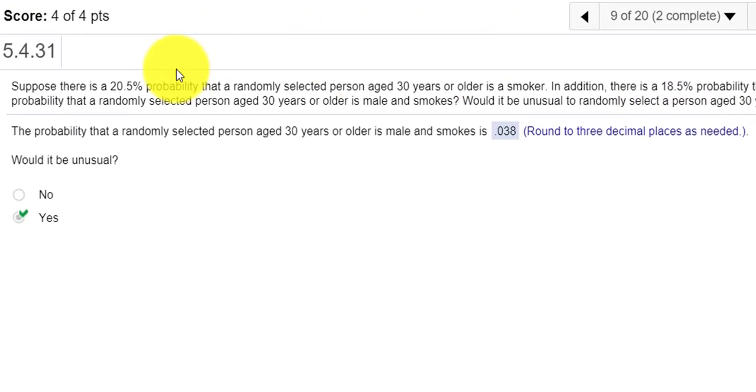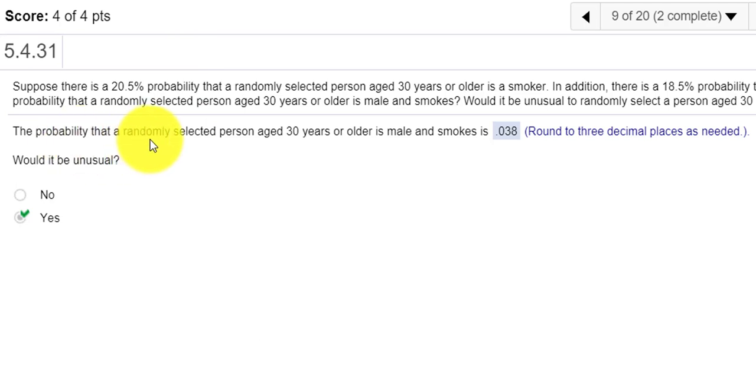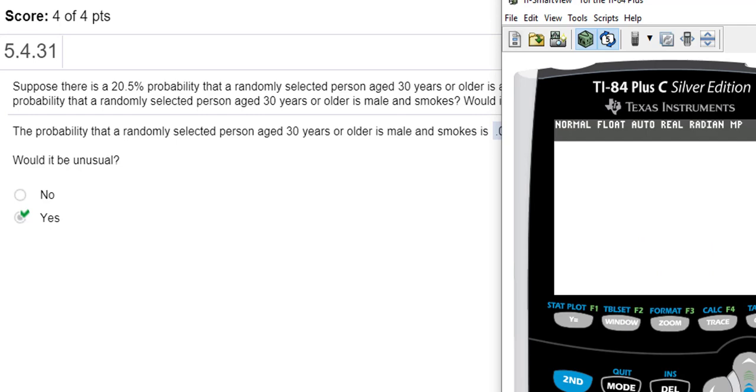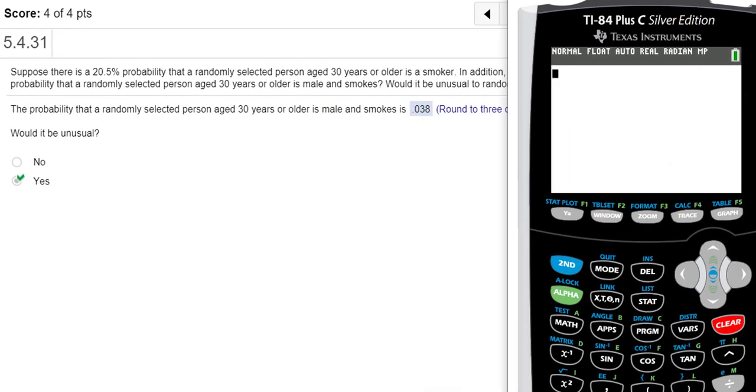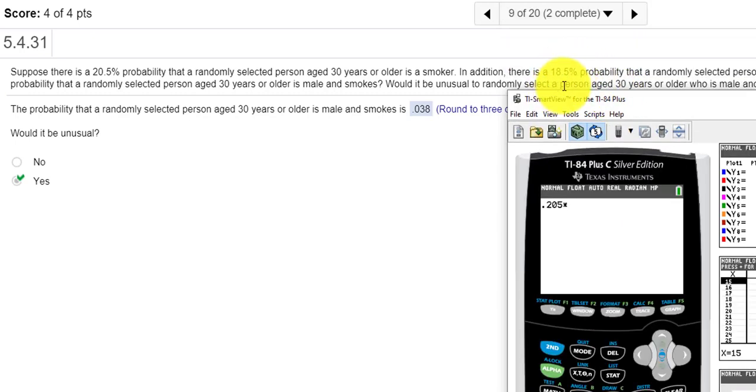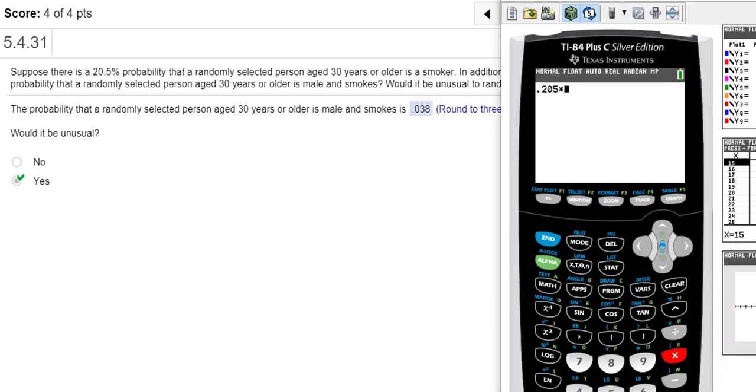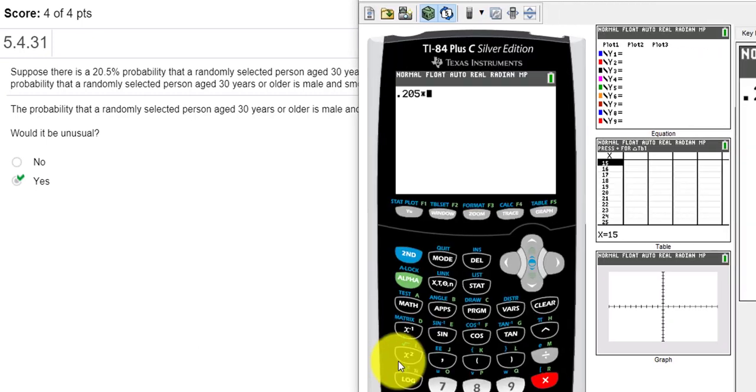So essentially, we're going to multiply these two probabilities to determine the probability that a randomly selected person aged 30 or older is male and smokes. So I take out my calculator, and I'm going to do 20.5% as a percent would be 0.205 times the 18.5%. I shrunk my calculator. Oh, 18.5% as a decimal is 0.185.